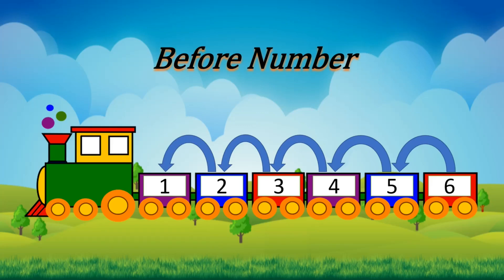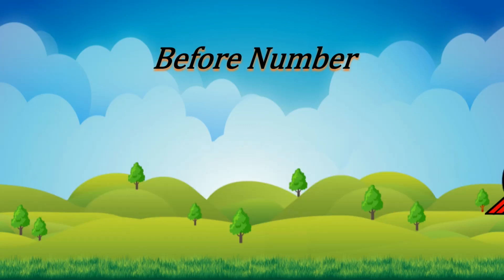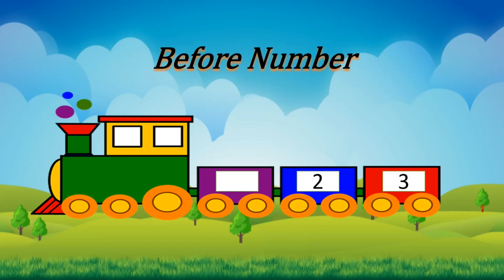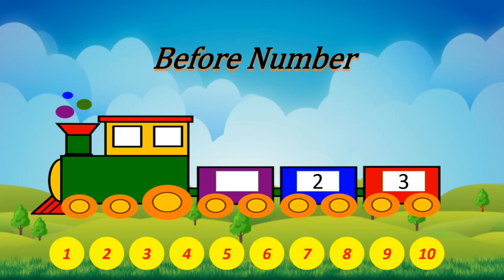Now let's see examples. Kids, here we have number 3. Which number comes before 3? Yes, it's number 2. Kids, can you guess which number comes before 2? Yes, very good — it's number 1.